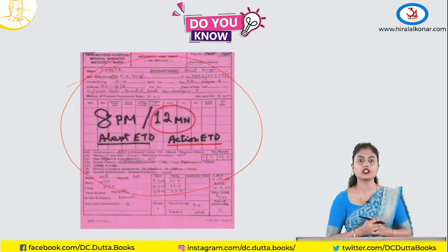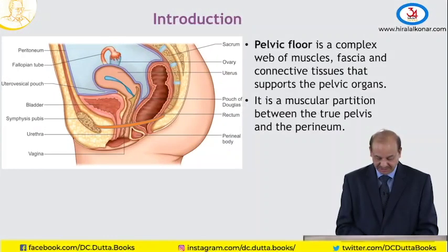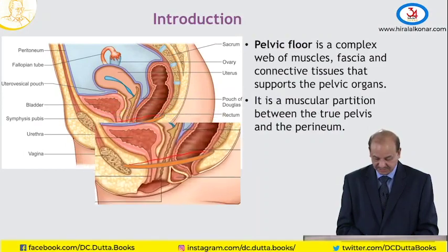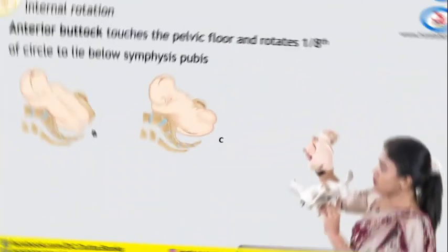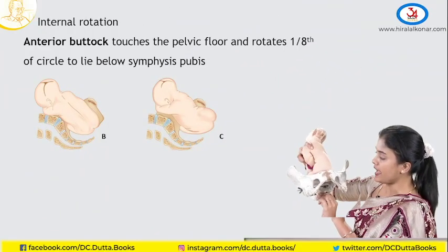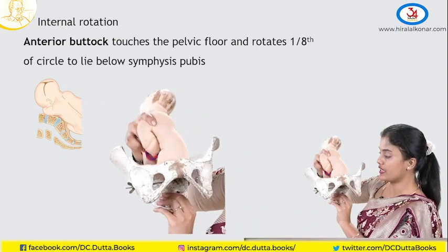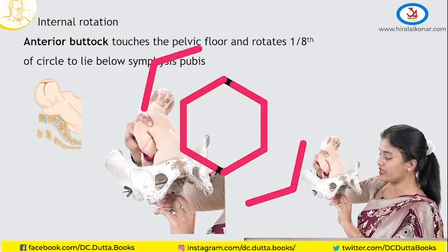What is a paperless partograph? This structure is the pelvic floor. This is how it entered at an angle of the left oblique diameter.